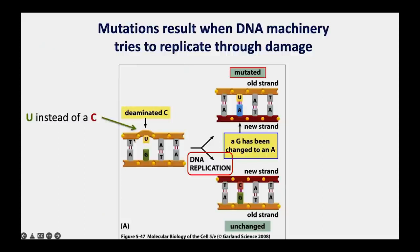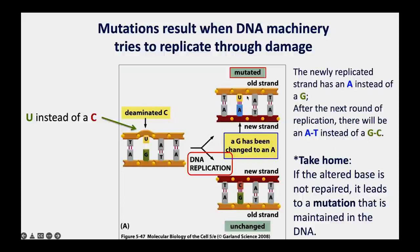If deamination is not repaired, here's what happens: normally we would have a G-C base pair, but when that C is deaminated and changes to a U, U does not pair with G. When that strand is replicated, an A is placed to pair with the U. Then in the next round of replication, the partner of A in DNA is T. So after two rounds of replication, instead of having a G-C pair, you end up with an A-T pair. The take-home message: if there's an altered base and it's not repaired, it leads to a mutation that's maintained in the DNA.